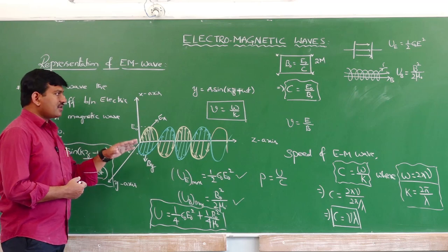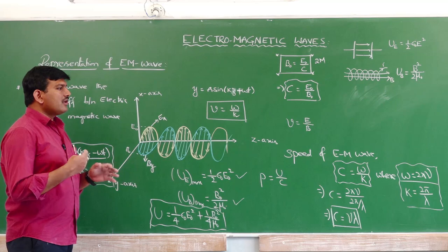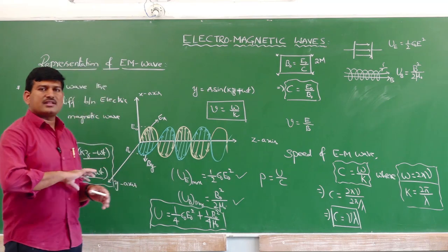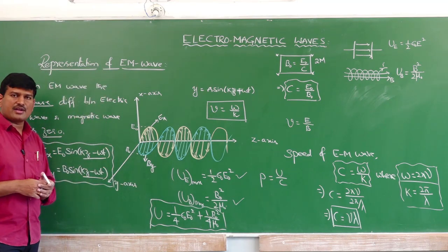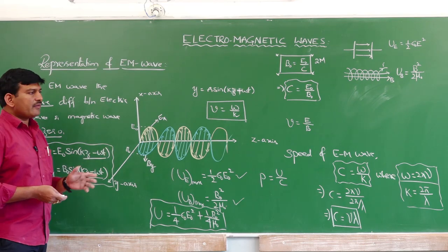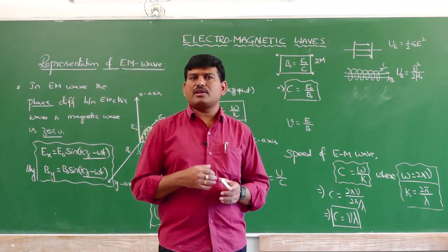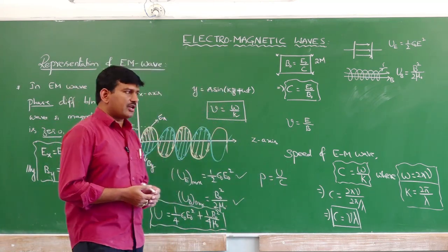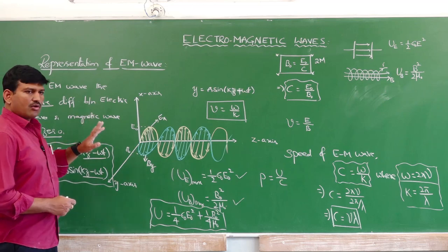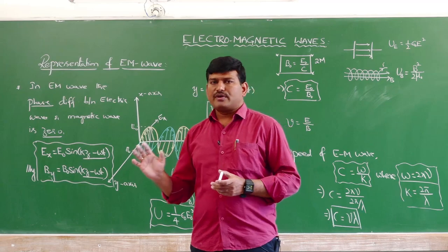Maxwell proposed electromagnetic theory, and Hertz discovered electromagnetic radiation experimentally. Later, Marconi and J.C. Bose developed the electromagnetic radiation further, and Marconi transported electromagnetic radiation over kilometers of distance, succeeding in the invention of radio. Nowadays we have different types of wireless communication like TV, radio, and mobile communication — all possible only because of electromagnetic waves. The last topic in this chapter is the electromagnetic spectrum.